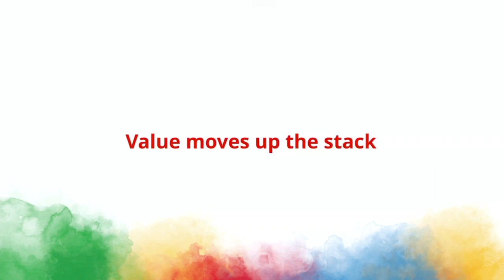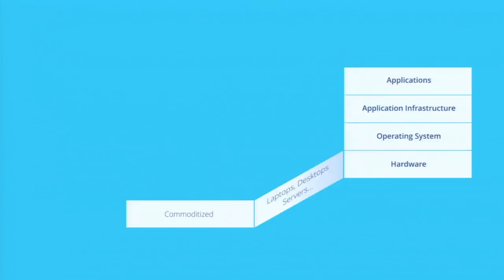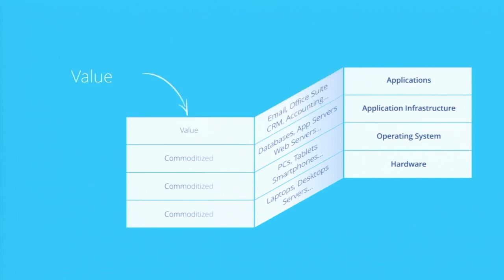When you have a bunch of different applications, your value starts getting what we call commoditized, where something at the lowest level becomes so cheap or indifferentiatable that there's no real value of one or the other. So you start moving from hardware, operating systems, application infrastructure — your actual physical computers, tablets, databases, back-end hosting, and then the actual applications themselves. Now you're essentially only buying the thing at the very top level because that's what you actually get value out of.